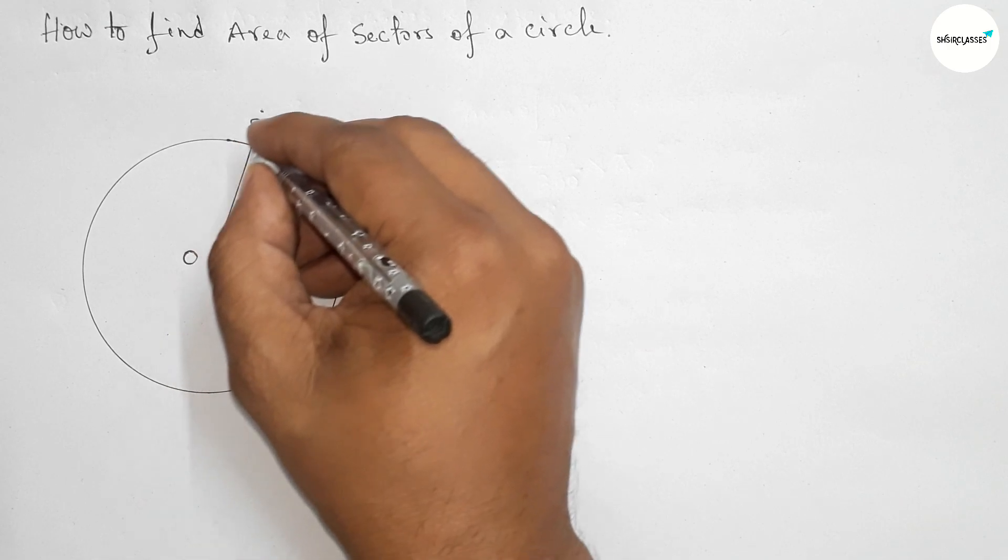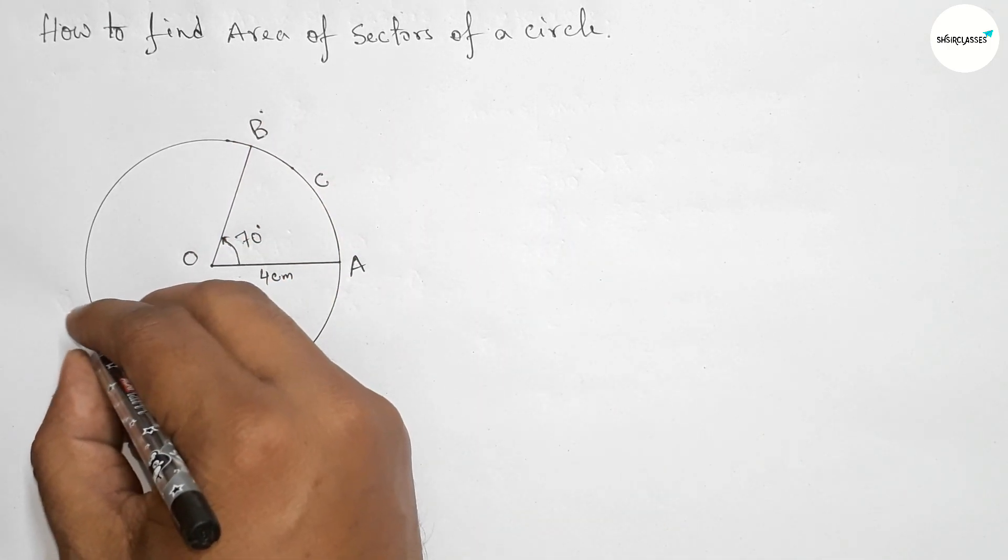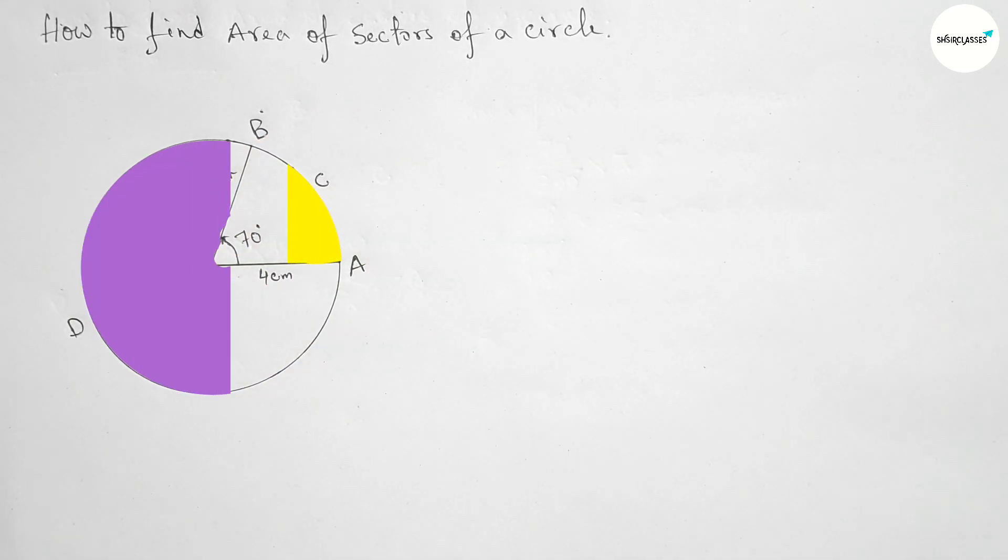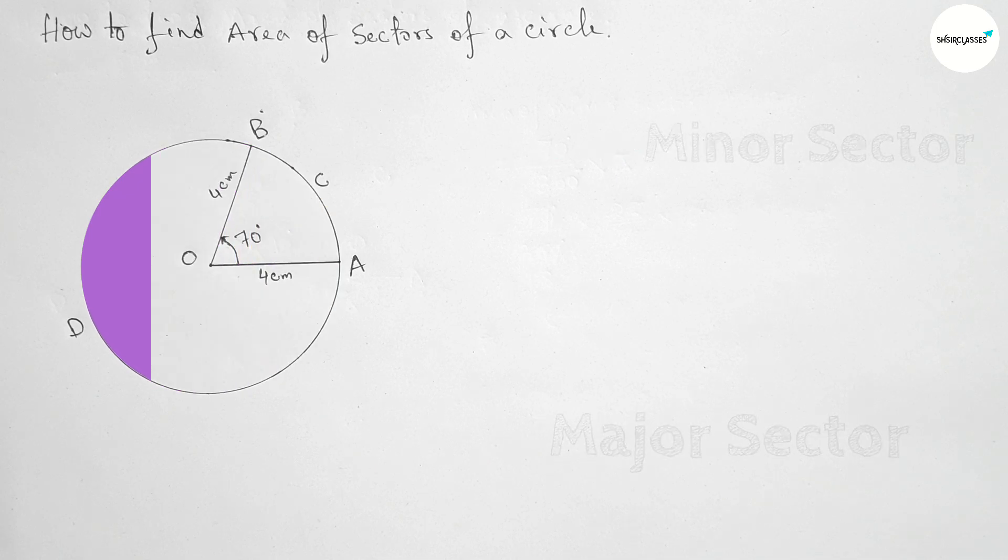And here this is the radius. Here you can see the yellow region is the minor sector and the purple region is the major sector of the circle.